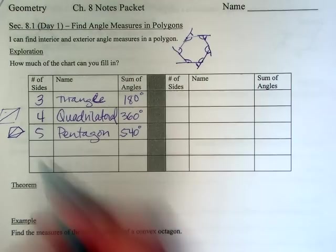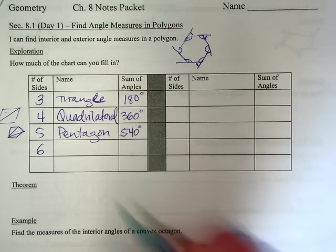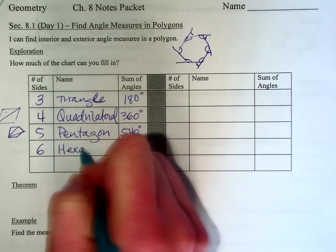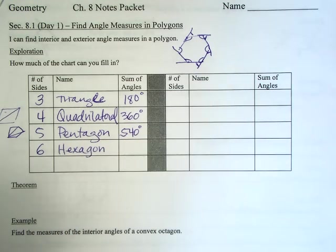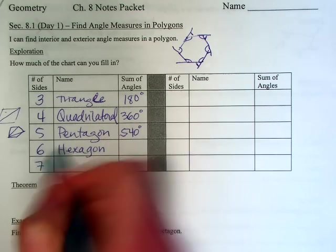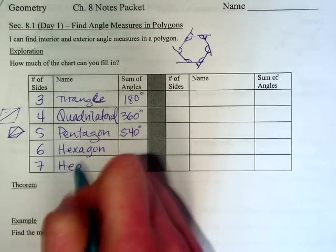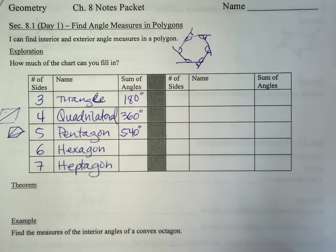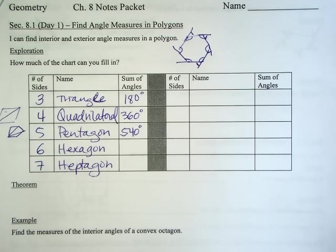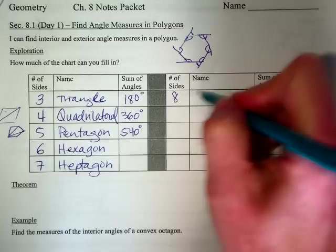And I'm just going to continue going. Six sides is called a hexagon. Seven sides is called a heptagon.